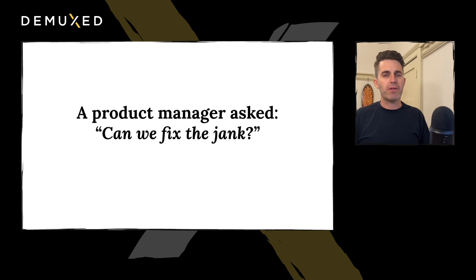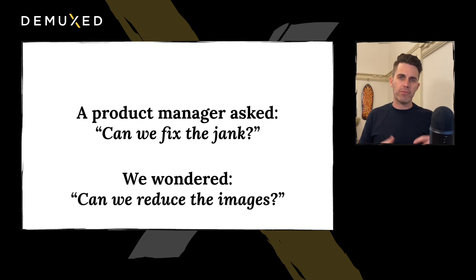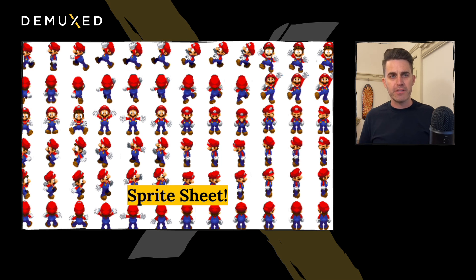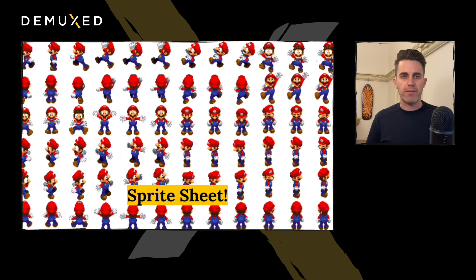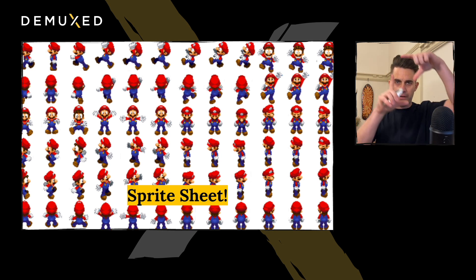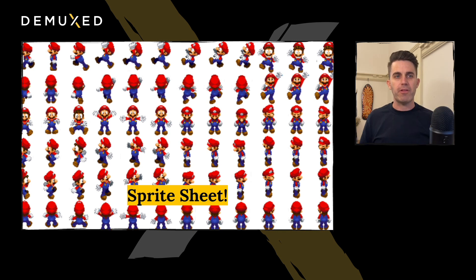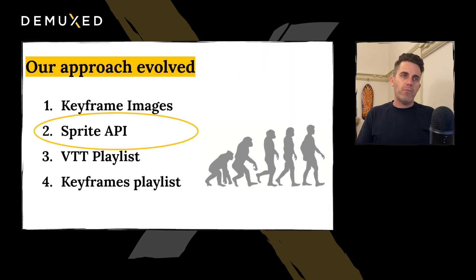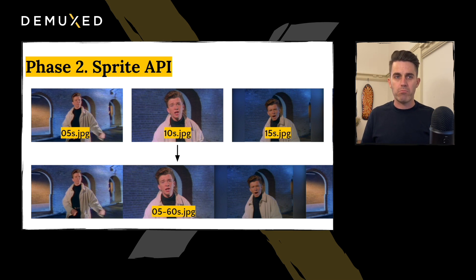The product manager asked pretty quickly if we could fix the jank — downloading images as you scroll isn't fluid. We wondered if we could reduce the number of images. We thought about it and came up with the sprite sheet. For those unfamiliar, you take a number of images, stitch them into one bigger image — a technique used in gaming to stay under memory limits — and then choose the Y position to generate the correct sub-image from the larger one. CSS made a lot of sense for this. So we went out and built an API for sprites, taking the keyframes we'd already created and stitching them into sprites. It was easy.